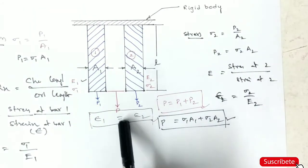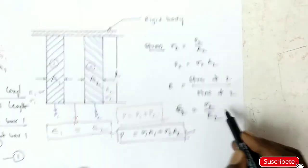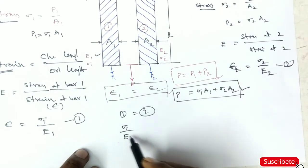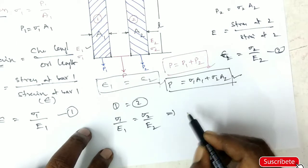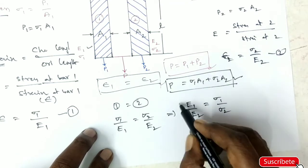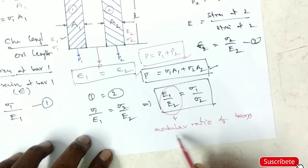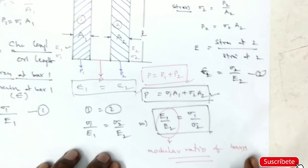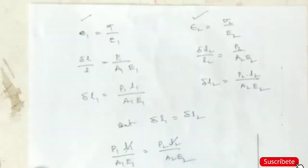Epsilon 1 equals sigma 1 by E1. Epsilon 2 equals sigma 2 by E2. E1 by E2 equals sigma 1 by sigma 2. This is the modular ratio.